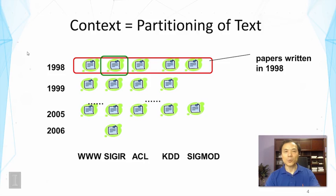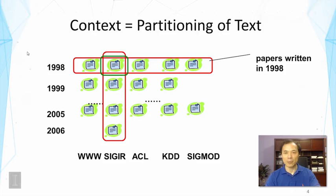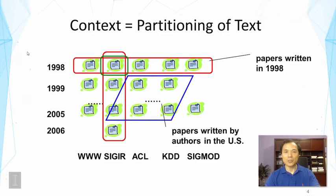We can also treat all the papers written in 1998 as one group. This is only possible because of the availability of time, and we can partition data in this way, allowing us to compare topics in different years. Similarly, we can partition the data based on venues — getting all the SIGIR papers and comparing those with the rest, or comparing SIGIR papers with KDD papers and ACL papers. We can also partition the data to obtain papers written by authors in the U.S., using the additional context of the authors, and compare that subset with papers written by authors in other countries.